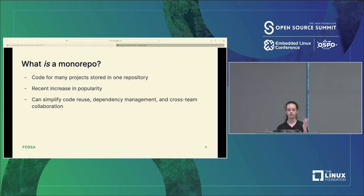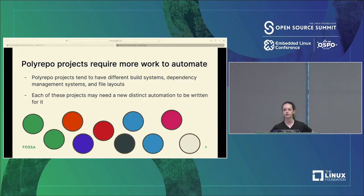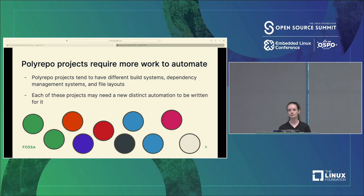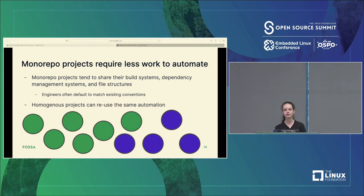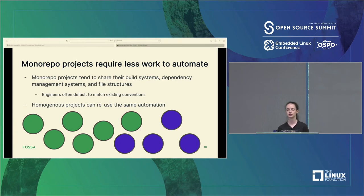We know why we care about automation and what a monorepo is — but why do we care about them together? Polyrepo projects require a lot of work to automate because each automation has to be specific to a project's build system, dependency management system, naming conventions, and so on. If you have many different projects, you may need to create a new distinct automation for each one, and that is expensive. In contrast, if you have a monorepo, the projects within it tend to be a lot more similar — shared build system, shared dependency management, shared file structures — because engineers default to matching existing conventions.